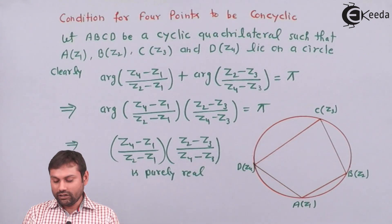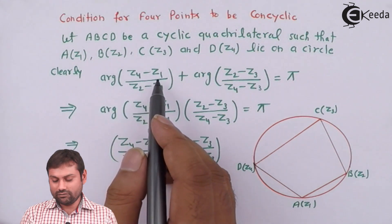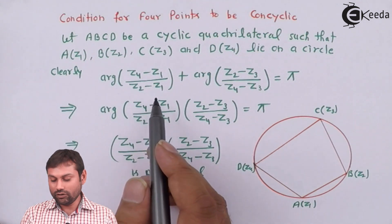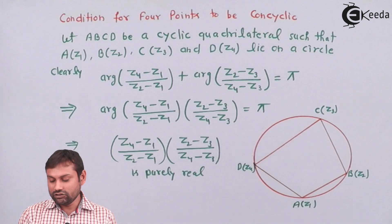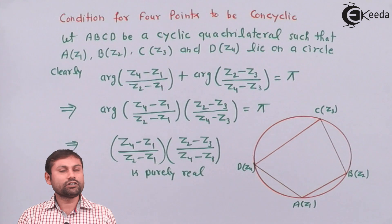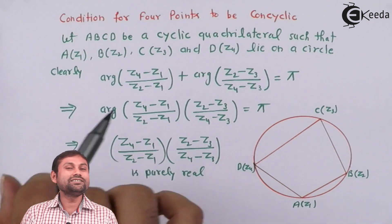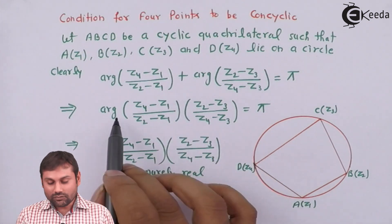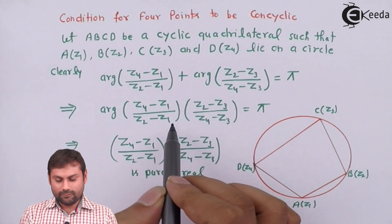Clearly, if you see the argument, argument of (Z4 minus Z1) upon (Z2 minus Z1) plus argument of (Z2 minus Z3) upon (Z4 minus Z3) that is equals to π. Now use the condition of argument property.